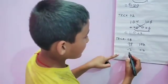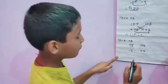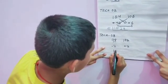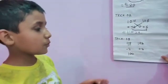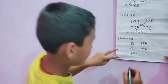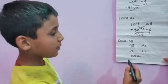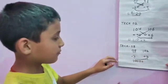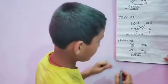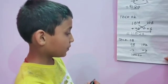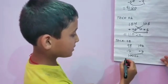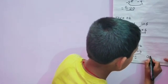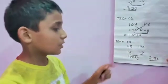Both cross operations give 100, so we write 100 here. We put 2 extra zeros after it, making 10000. Then we multiply the lower digits: 2 multiplied by 2 is 4. We subtract 4 from 10000, and our answer is 9996. Thank you.